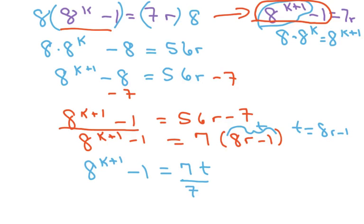So basically, 8 to the n minus 1 is divisible by 7. I'll just do that. For all integral values of n, and we want it to be positive.